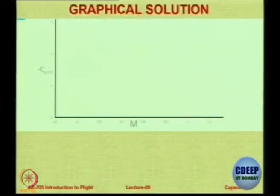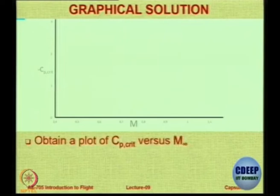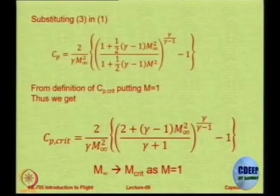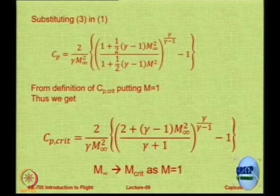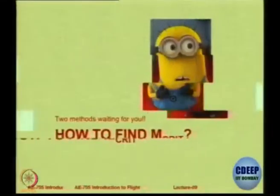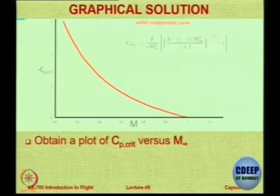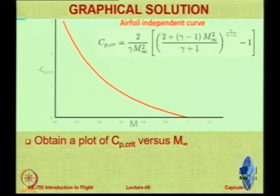The graphical method is very elegant and simple. On the y-axis you plot Cp critical, on the x-axis you plot Mach number. You obtain a plot of Cp critical versus Mach number from the equation we just derived — Cp critical is purely a function of M infinity for any aerofoil. Using this expression you can get a simple plot. It is a quadratic plot because there is M infinity squared.